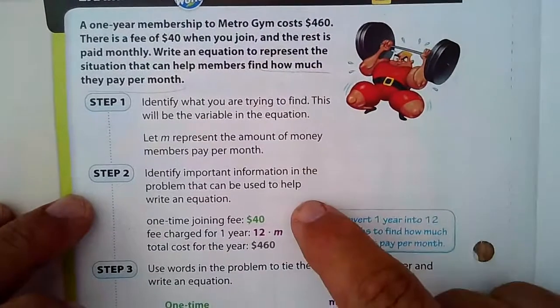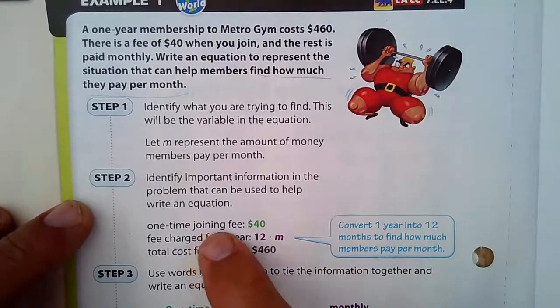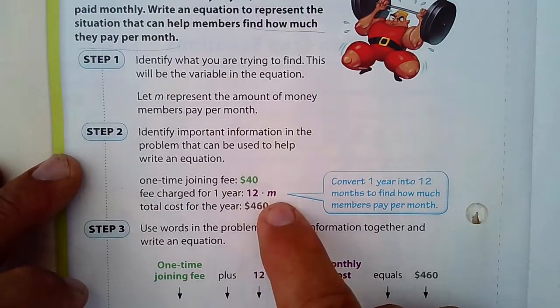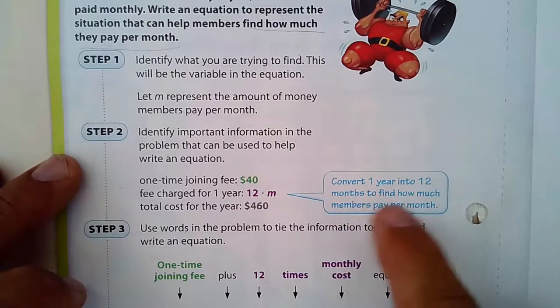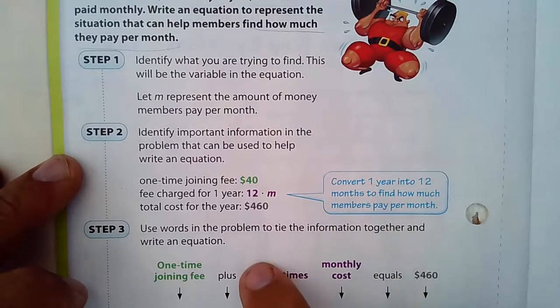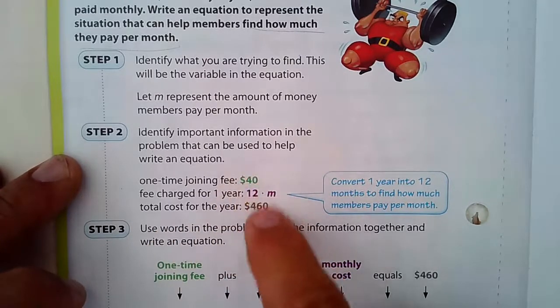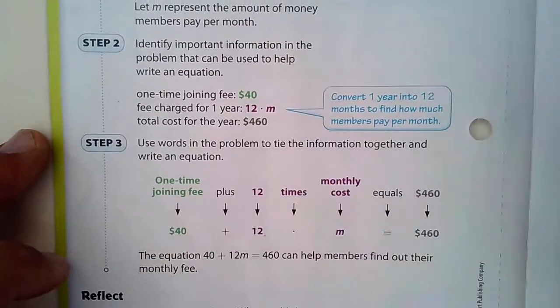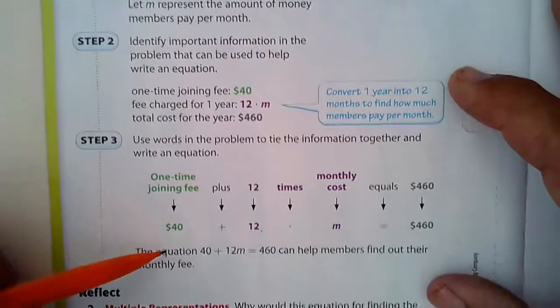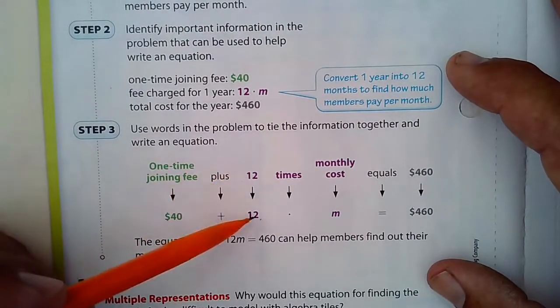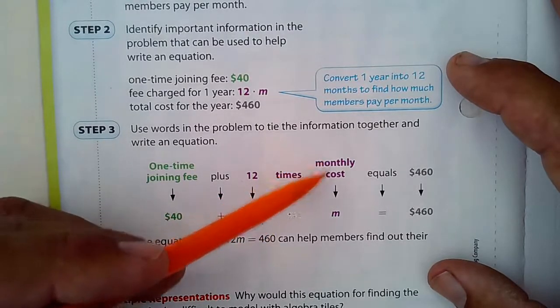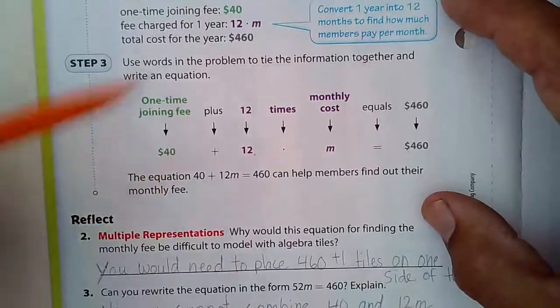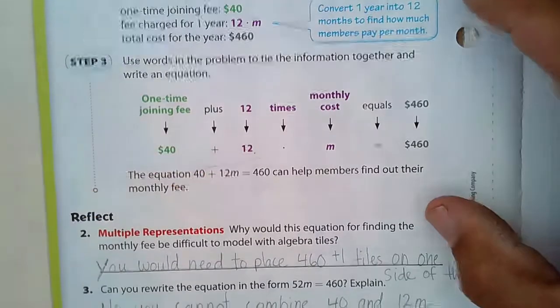Identify the important information in the problem. They told us a one-time joining fee is $40. The fee charge for one year is 12 times each month, so you convert the year into 12 months to find out how much they're paying per month. The total cost is $460. Use the words in the problem to tie in the information. We have our one-time fee, that was $40. And then we have to add to that 12 times the monthly cost, and that totals $460 for the year.